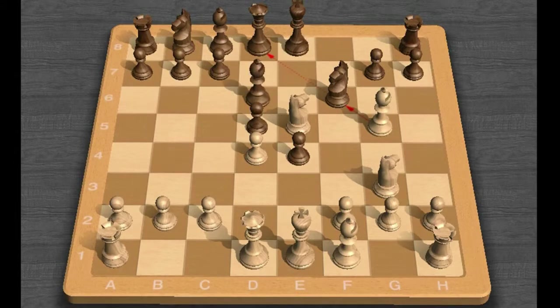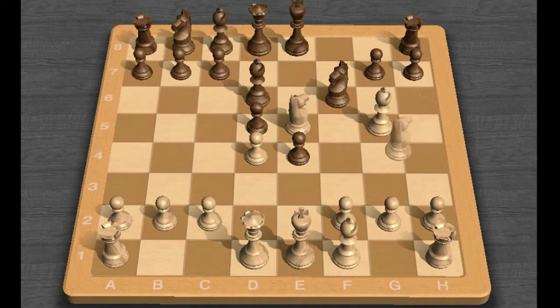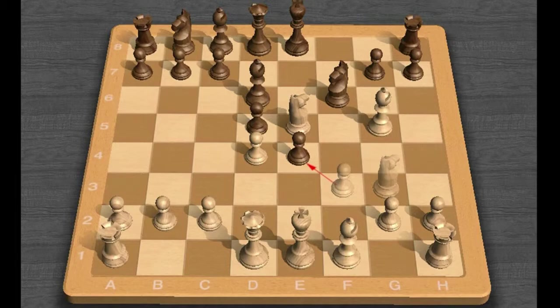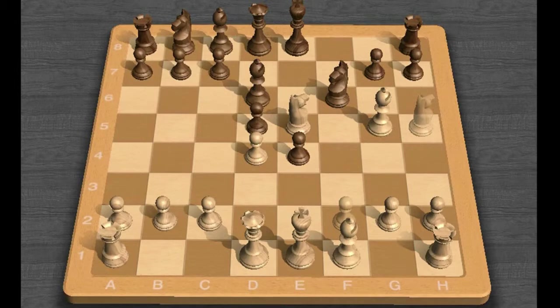Bishop D6, Knight H5. F3 attacking the center was again the move of choice. Instead, Mr. Bird violates a basic principle by moving an already developed piece twice in the opening. Now Black starts to get the upper hand.